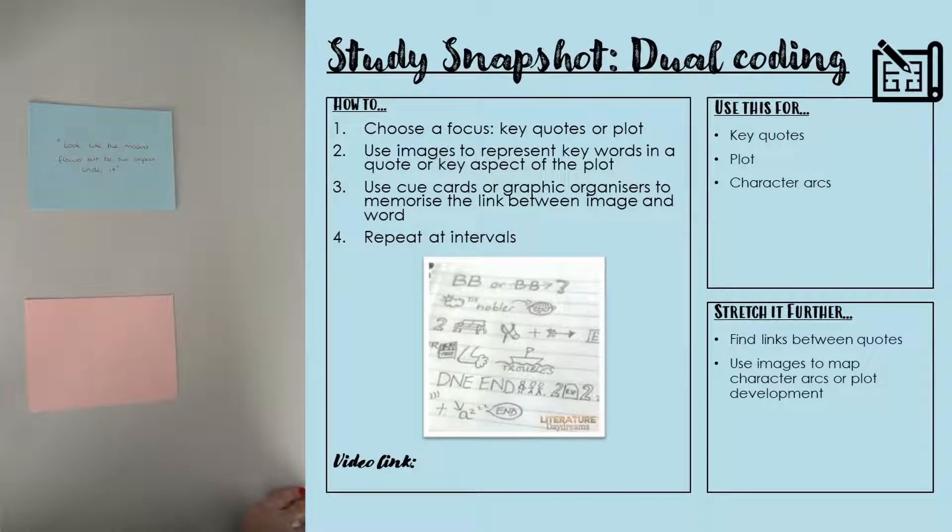For this study snapshot we're going to look at a technique called dual coding. This is a really good technique for things such as key quotes, plots, or character arcs.